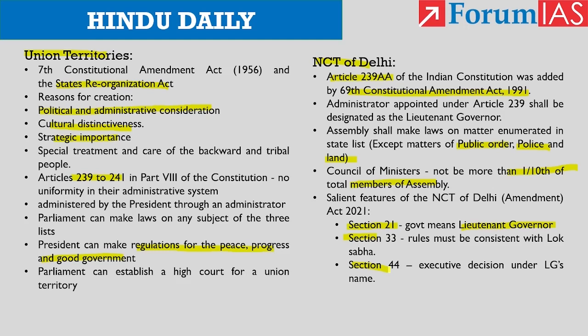As a suggestion, the new act should be reconsidered in the light of Justice D.Y. Chandrachud's note in the 2018 verdict, in which he says that in a democratic form of government, the real power must subsist in the elected arms of the state. A cautious discussion and deliberation should take place between the Centre and Delhi government on the ambiguous provisions, which will help in the eradication of unconstitutional and undemocratic provisions. The government at the Centre and the states must cooperate to ensure that the lieutenant governor can discharge its constitutional functions. In this topic we saw about union territories, National Capital Territory of Delhi, and the salient features of NCT Delhi Act 2021.